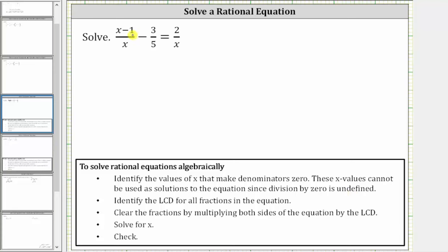So looking at the equation, notice how we have an x in the denominator here and here, and x cannot equal zero, because if it did, we would have division by zero. So let's make a note here that x can't equal zero. So if we happen to solve the equation and get a solution of zero, we would exclude that value.